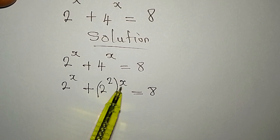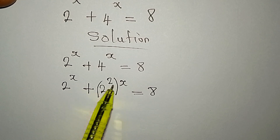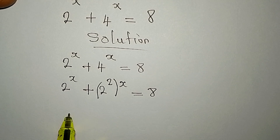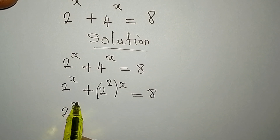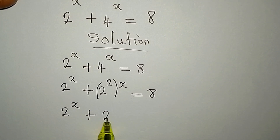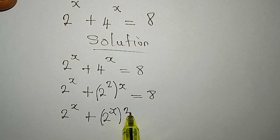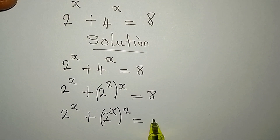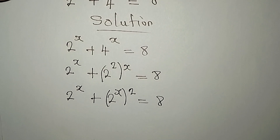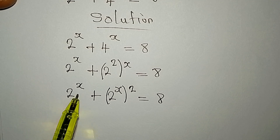We can interchange the powers — I can take the 2 and bring x in, so we'll have 2 to the power of x, plus 2 to the power of x with the square outside, and that is equal to 8.